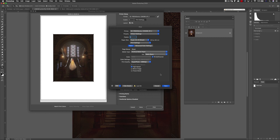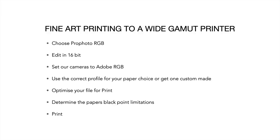In summary, here are the main points to consider in our colour management workflow when creating fine art prints using a wide gamut printer: the colour space, the editing stage, what we set our cameras to, profiling — making sure we know what our profile does to our paper, what we can print and what we can't, adjusting our file accordingly — and then creating a beautiful fine art print. I sincerely hope you all enjoyed this video tutorial, and I look forward to seeing you all next time.